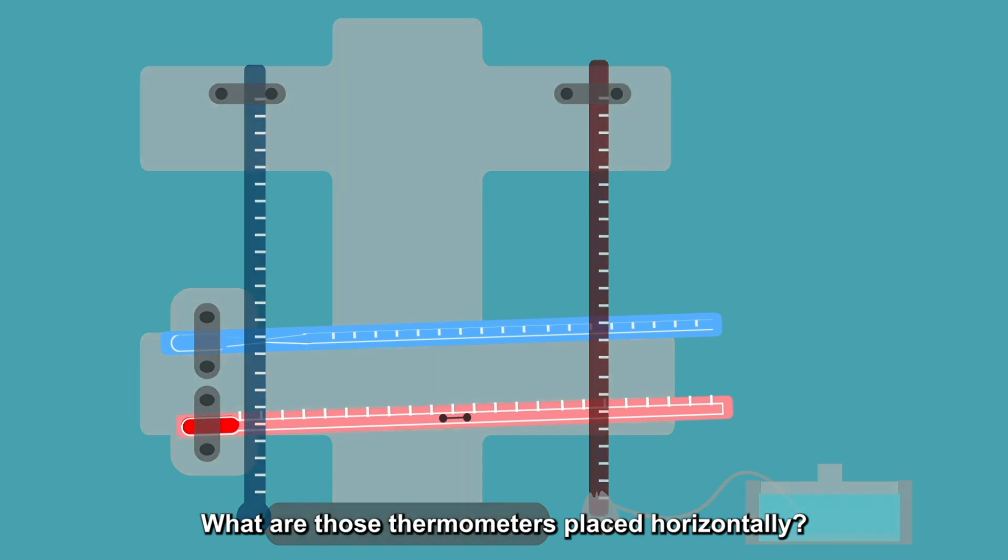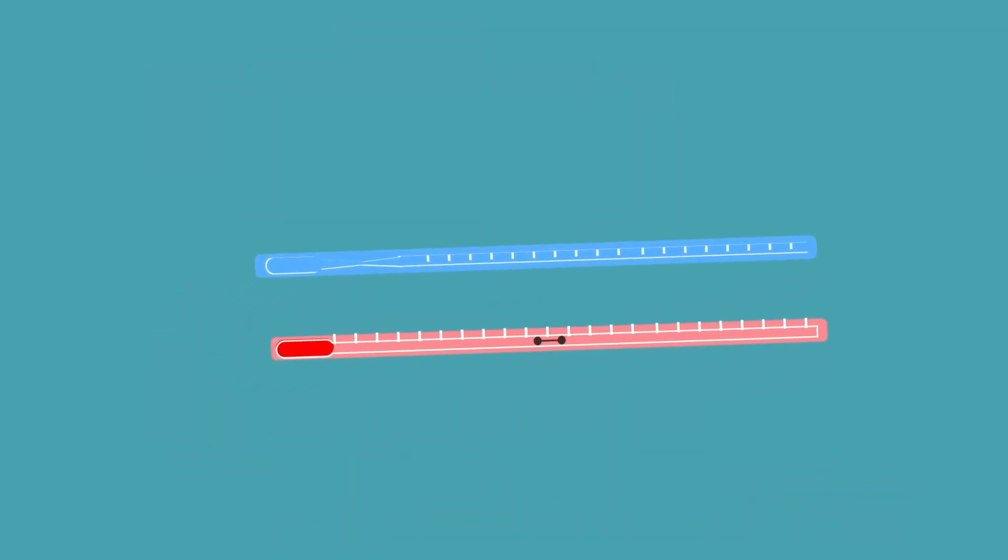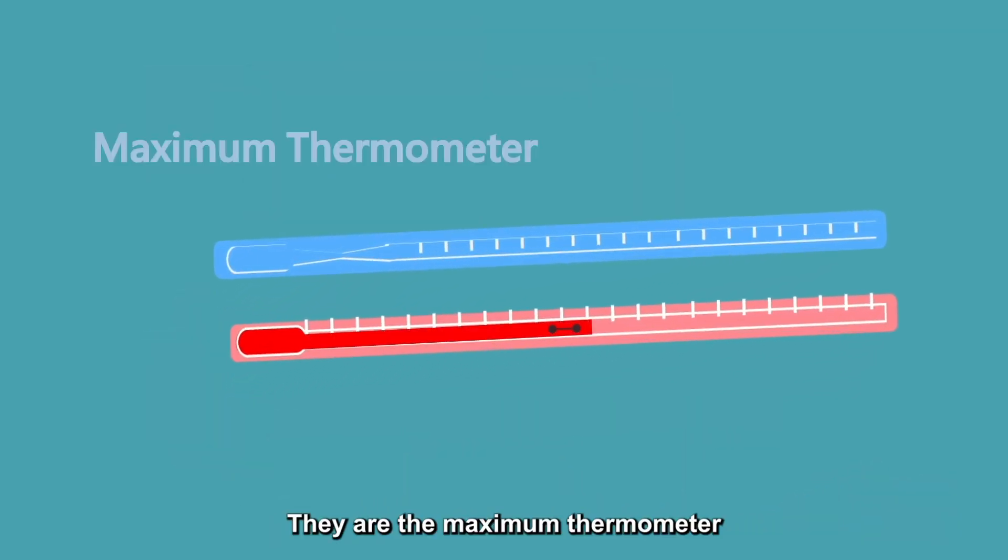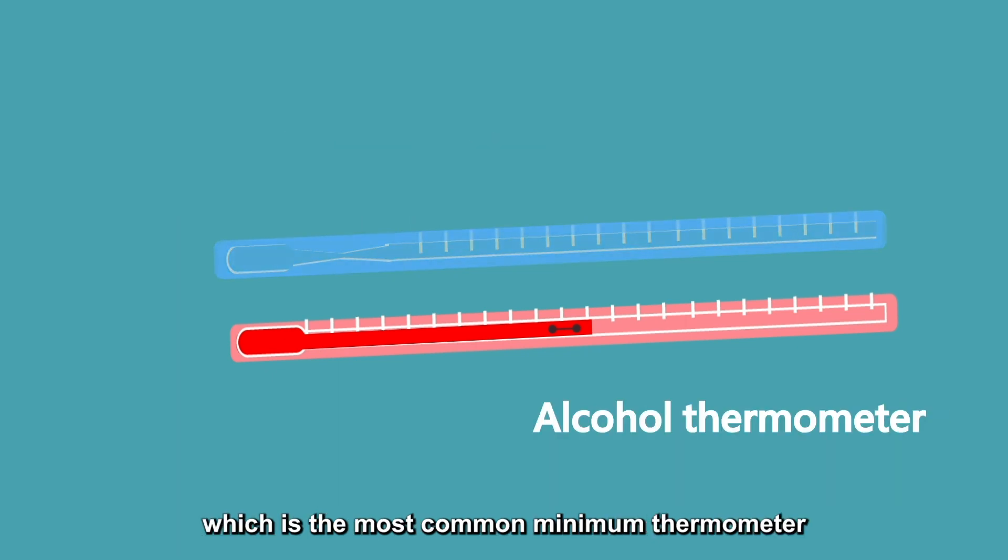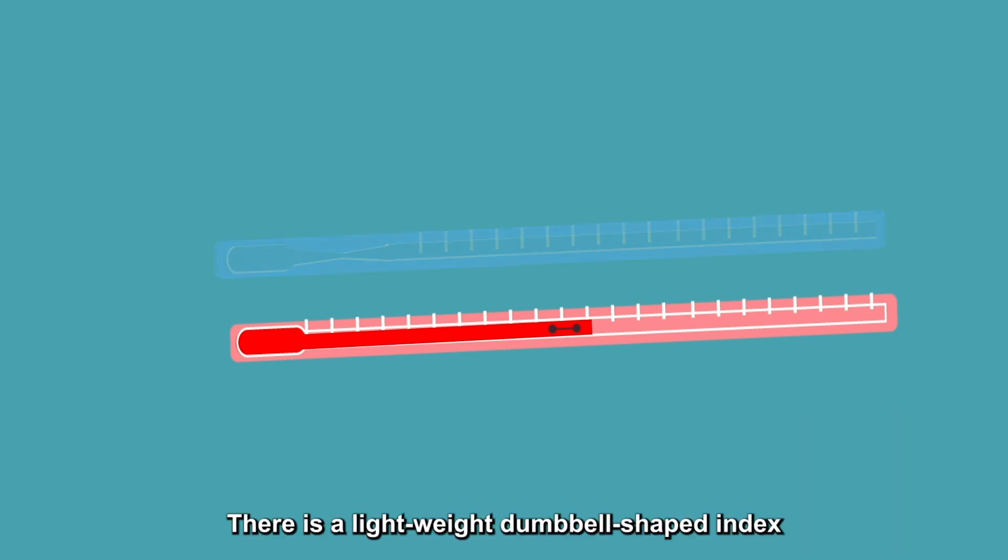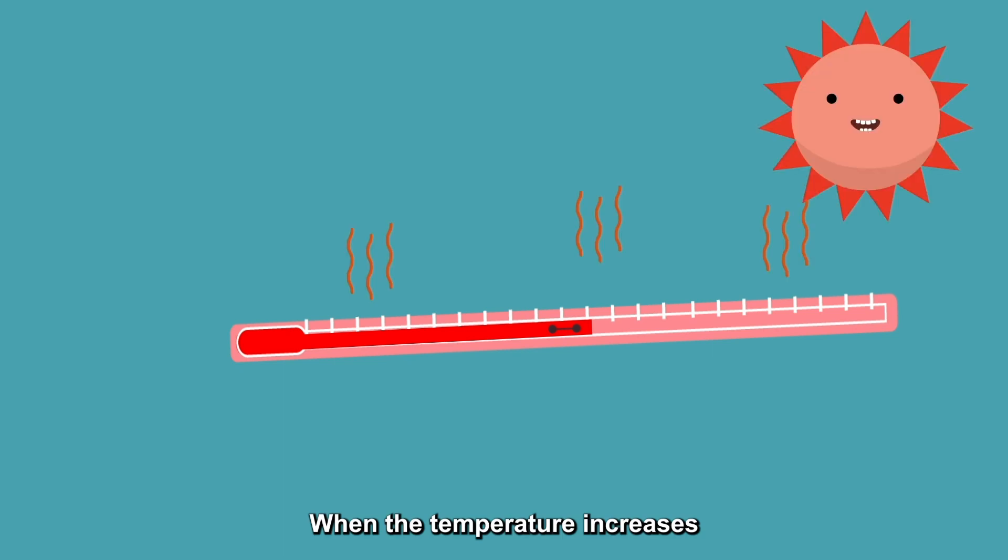What are those thermometers placed horizontally? They are the maximum thermometer and the minimum thermometer. The one at the bottom is an alcohol thermometer, which is the most common minimum thermometer. There is a lightweight dumbbell-shaped index inside the thermometer. When the temperature increases, the alcohol flows through the index.